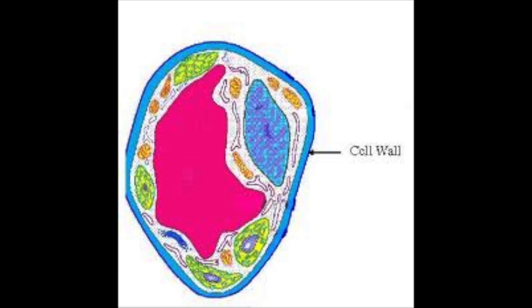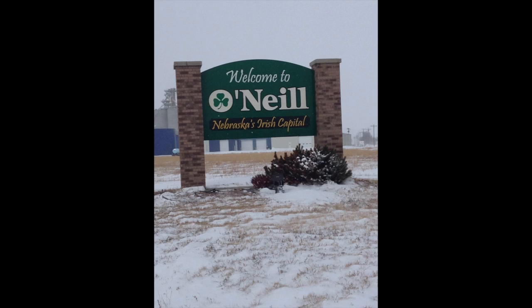The cell wall is a rigid structure that encloses and protects the cell of plants, algae, fungi, and most bacteria. We are comparing the cell wall to the city sign because the city sign tells us what town you are entering and it is like enclosing the city.